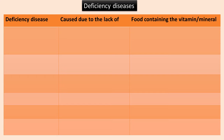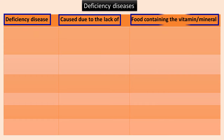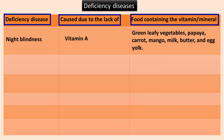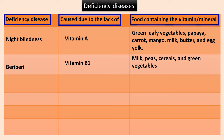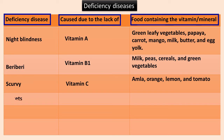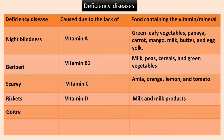The table below explains the disease name, cause, and the food that contains the particular vitamin or mineral. Night blindness is caused by deficiency of Vitamin A; sources include green leafy vegetables, papaya, carrot, mango, milk, butter, and egg yolk. Beriberi is caused by deficiency of Vitamin B1; sources include milk, peas, cereals, and green vegetables. Scurvy is caused by Vitamin C deficiency; sources include amla, orange, lemon, and tomato. Rickets is caused by Vitamin D deficiency; sources include milk and milk products. Goiter is caused by iodine deficiency; sources include iodized salt, cranberries, and seafood.